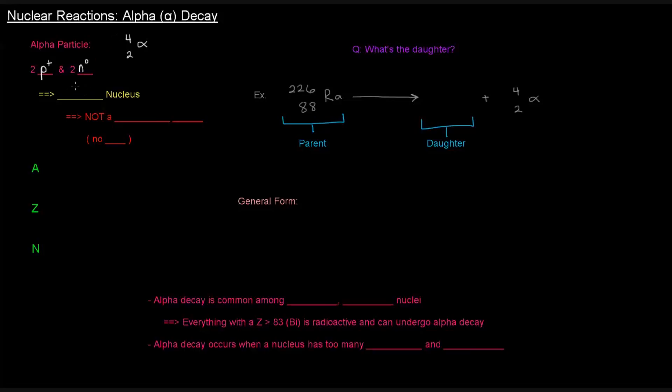Basically, it's a helium nucleus because helium, if you look on the periodic table, has an atomic number of two and a mass number of four. It has two protons and two neutrons. That's the helium nucleus.